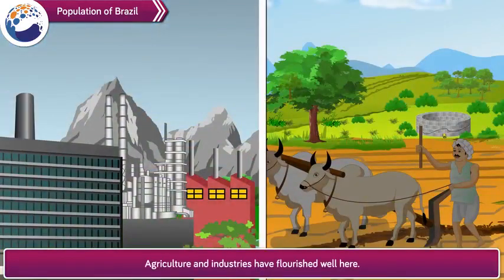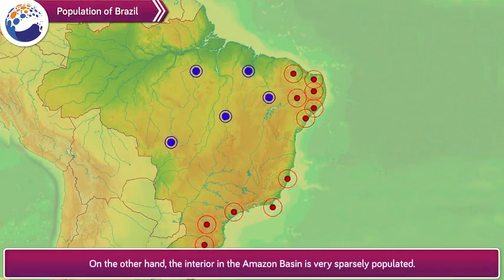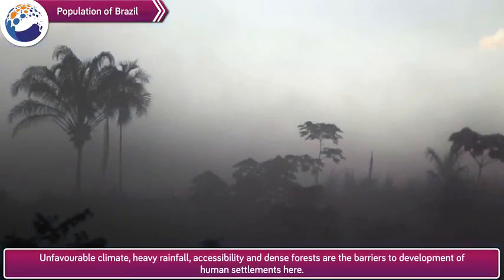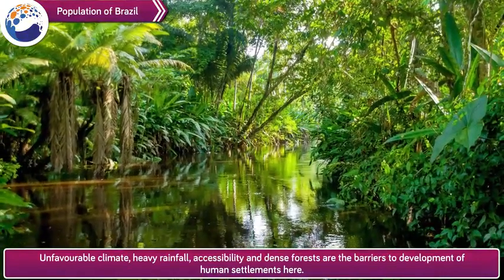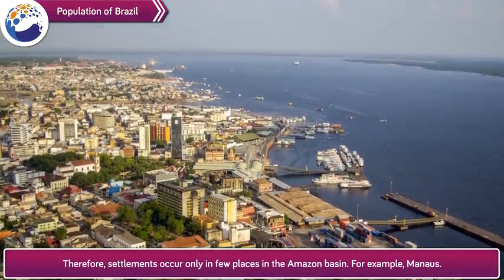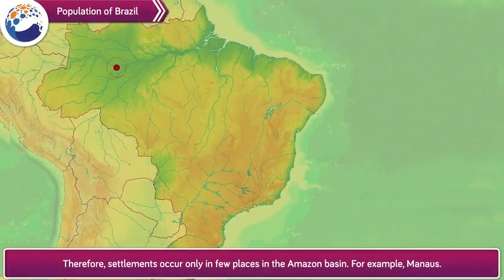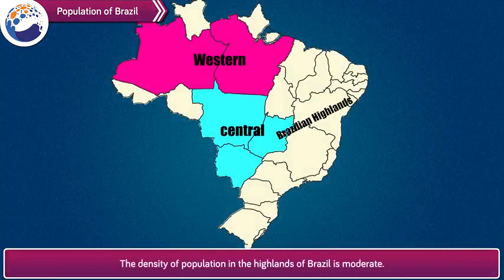Agriculture and industry have flourished well in the coastal lowlands. As a result, higher density of population is found here. On the other hand, the interior of the Amazon basin is very sparsely populated. Unfavorable climate, heavy rainfall, inaccessibility and dense forests are the barriers to development of human settlements here. Therefore, settlements occur only in few places in the Amazon basin, for example Manaus. The central and western part of Brazil is less populated. The density of population in the highlands of Brazil is moderate.